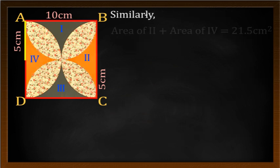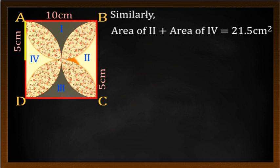Similarly, area of 2nd plus area of 4th is equal to 21.5 cm².